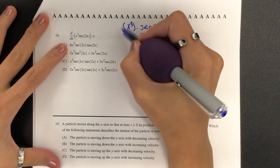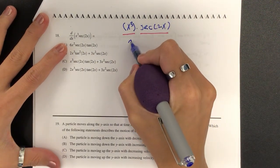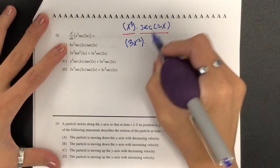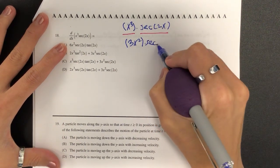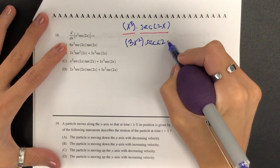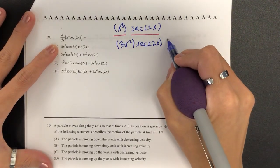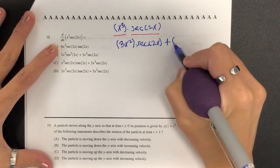So the rule says we derive this guy over here, which is 3x squared. And then what do I do with the second one? Just keep it. And then what operation separated this one? Plus. And then we keep the first one, x cubed.